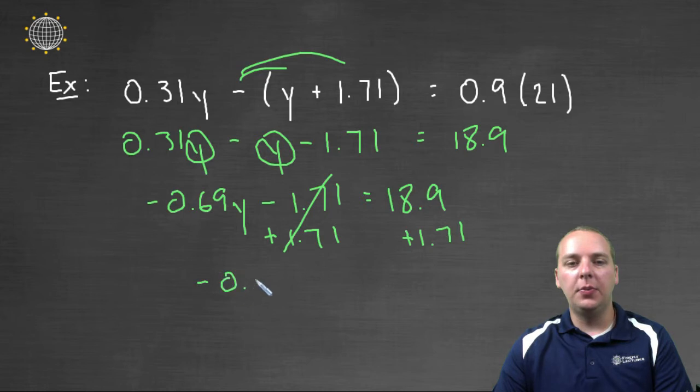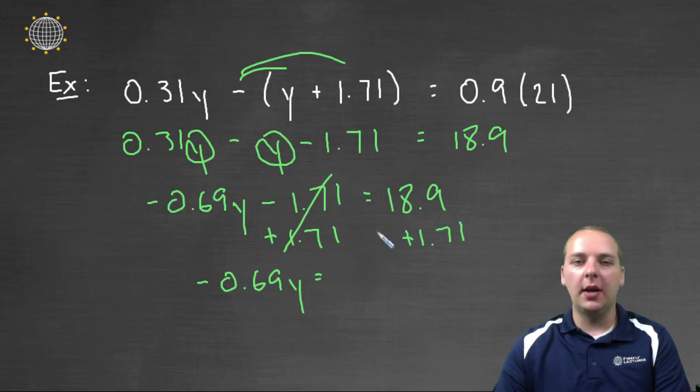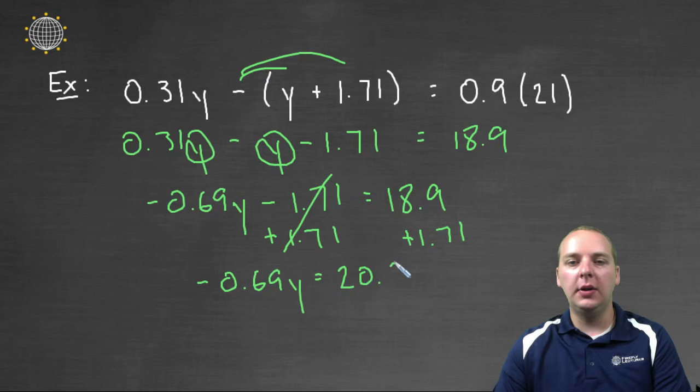And we'll get -0.69y = let's see this will be, I'll skip the calculator for this one, I believe it's 20.61 if my algebra is correct. And then the last step as always is to divide by the variable's coefficient, -0.69.